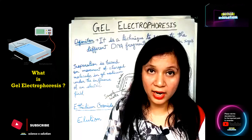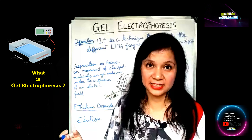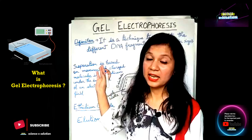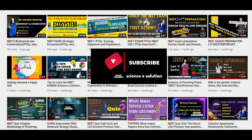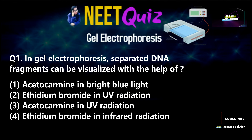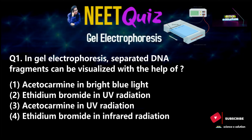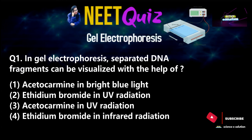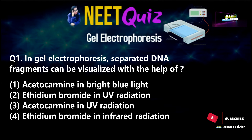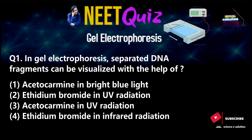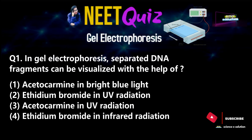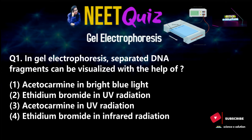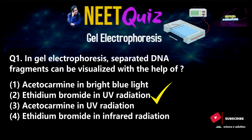Now we will discuss the five questions from previous years on this topic — from the last 10 years. It is a small but very important topic with 5 questions. Question number one, which was asked in 2020: In gel electrophoresis, separated DNA fragments can be visualized with the help of — Option 1: Acetocarmine in bright blue light; Option 2: Ethidium bromide in ultraviolet radiation; Option 3: Acetocarmine in ultraviolet radiation; Option 4: Ethidium bromide in infrared radiation. The correct answer is option number two — ethidium bromide in ultraviolet radiation.